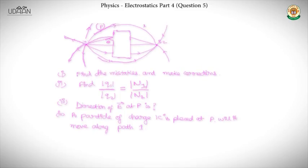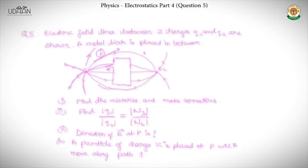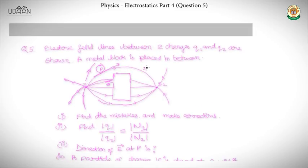The next part asks: a particle of charge 1 coulomb is placed at P — will it move along path 1? Electric field lines don't tell the path of the particle. They indicate the direction of the electric field at each point. From the direction of the field at P, the particle will not follow that path — it will go above it because the force is acting in that direction. So it should not follow path 1.